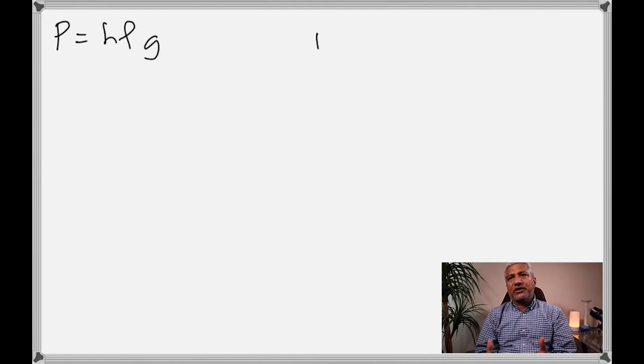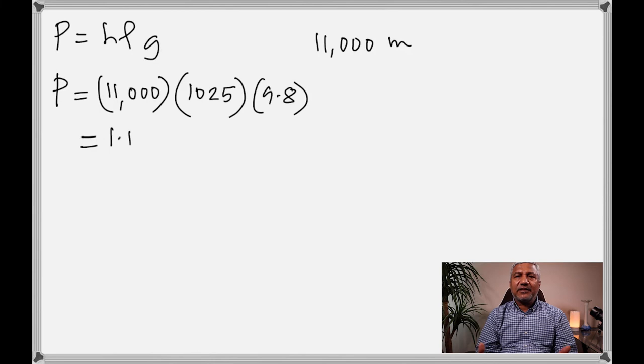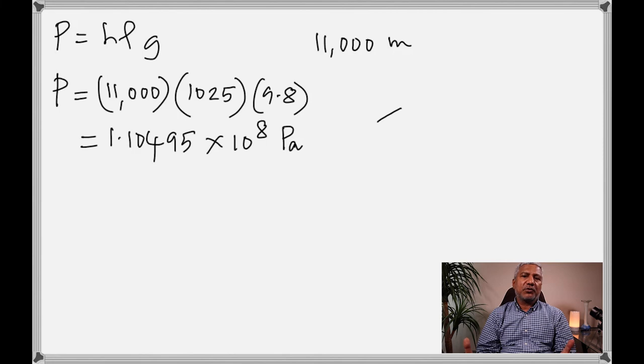Always use P = hρg. For example, at the deepest part of the Pacific Ocean — the Mariana Trench — the depth is 11,000 meters. Multiply by the density of sea water, 1025 kg/m³, and g, and you get a huge pressure. That's why you cannot go to the bottom of the ocean without protective gear — you would be crushed.